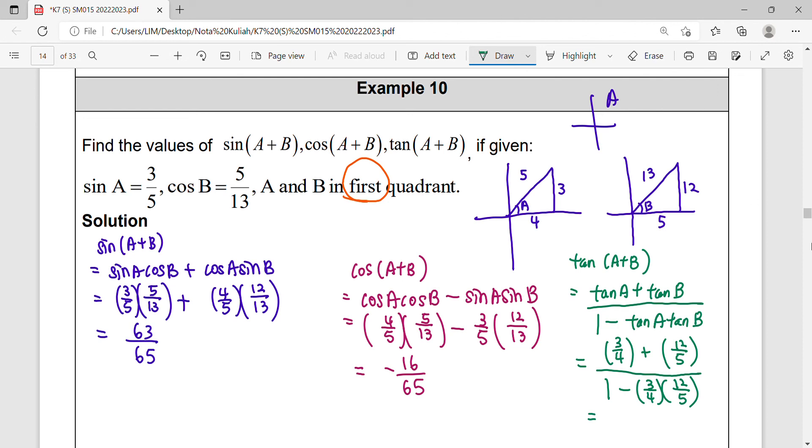So still every ratio here are positive because of first quadrant. If you get second quadrant or third quadrant, the sine, cosine, tangent value will be positive or negative, different. Alright, simplify this operation ratio, you get negative 63 over 16.